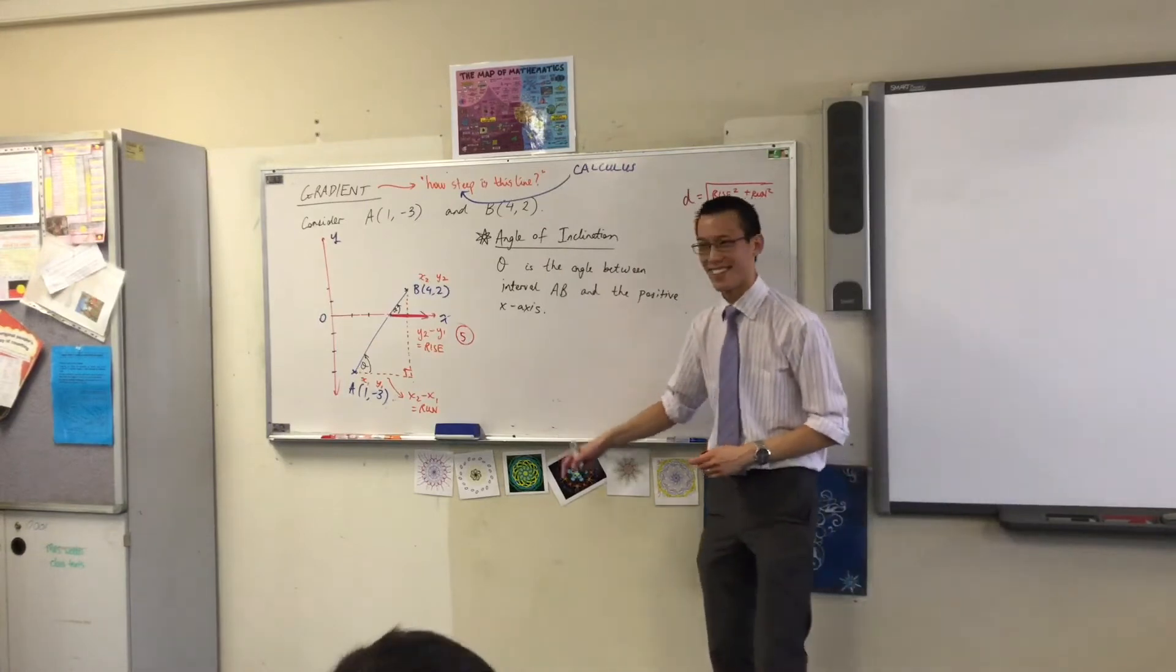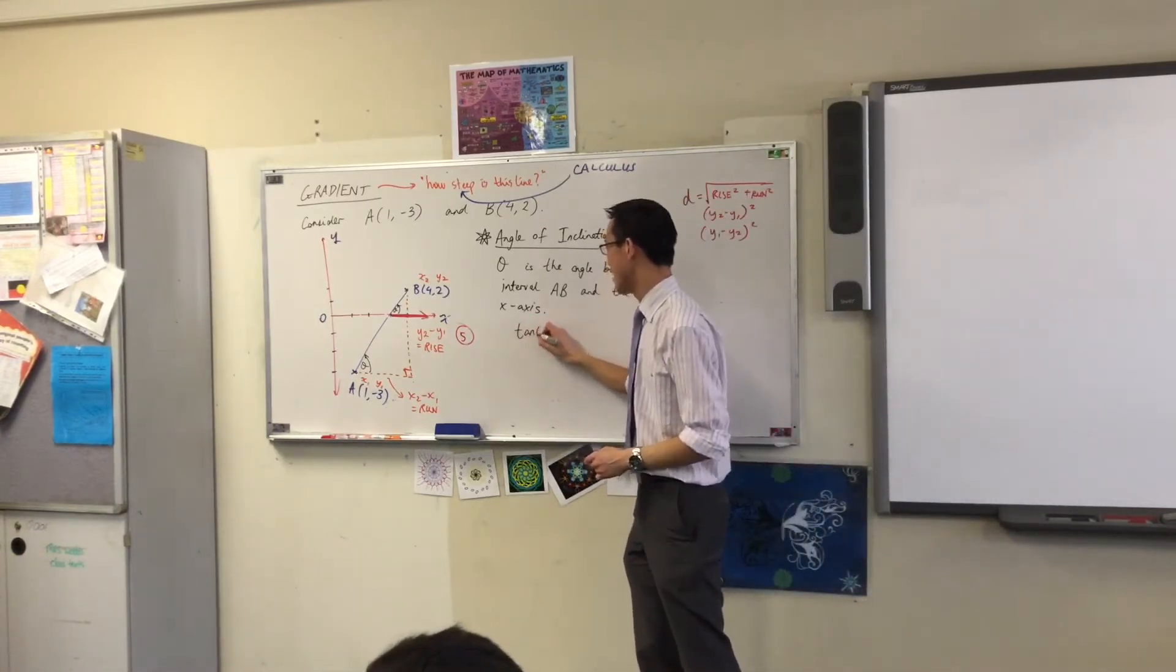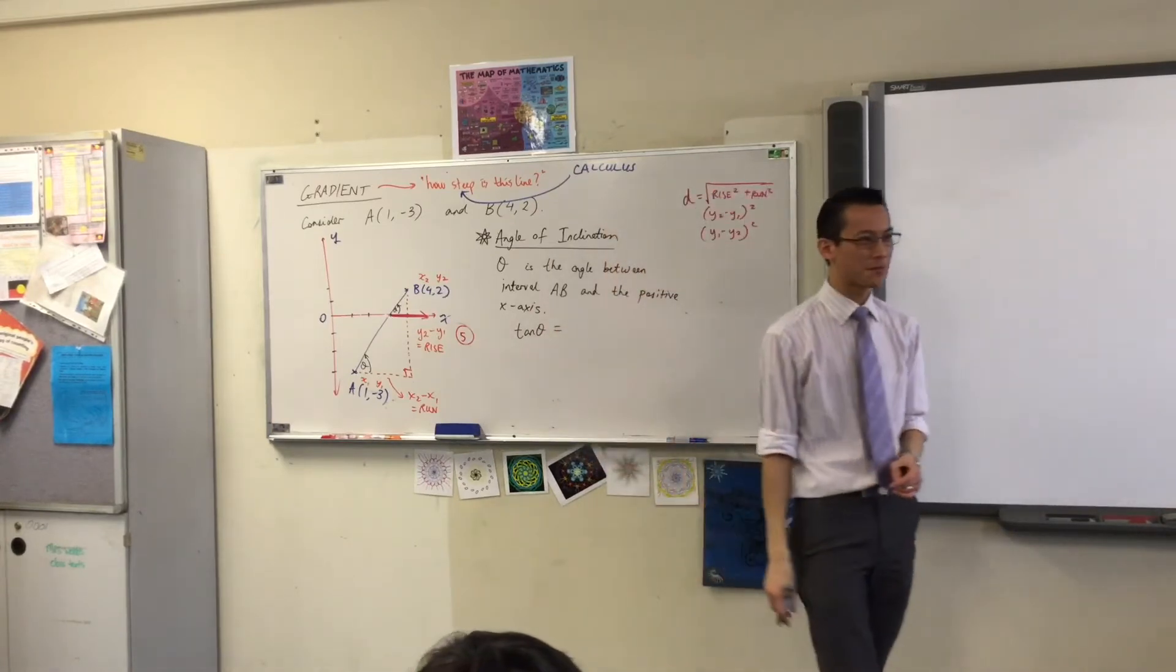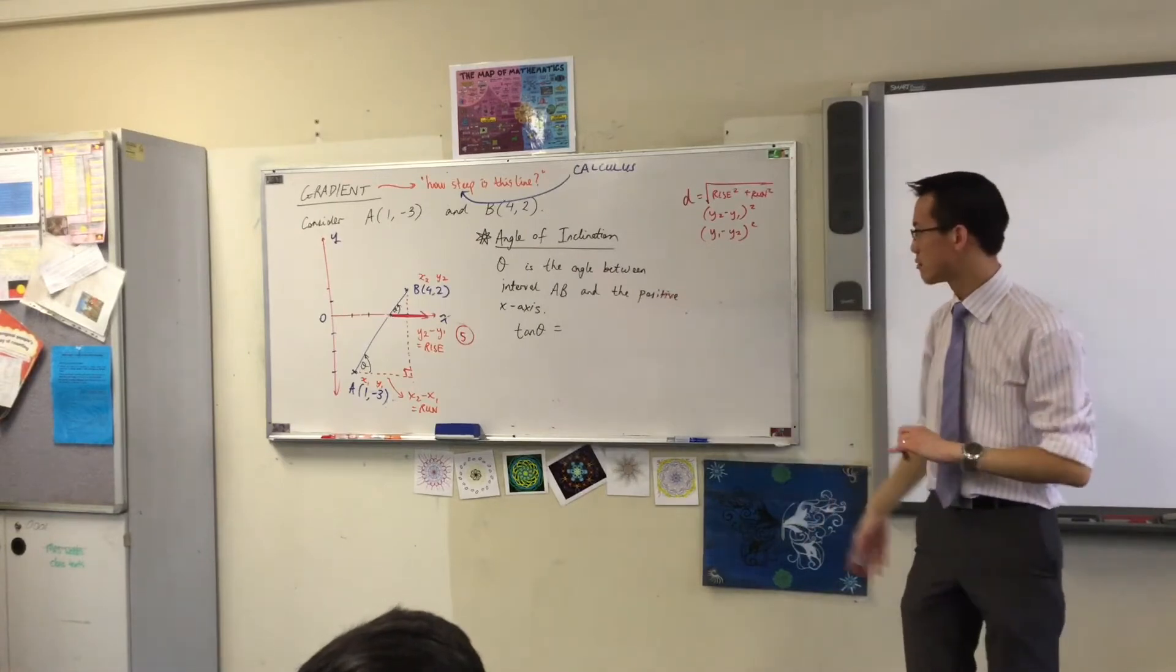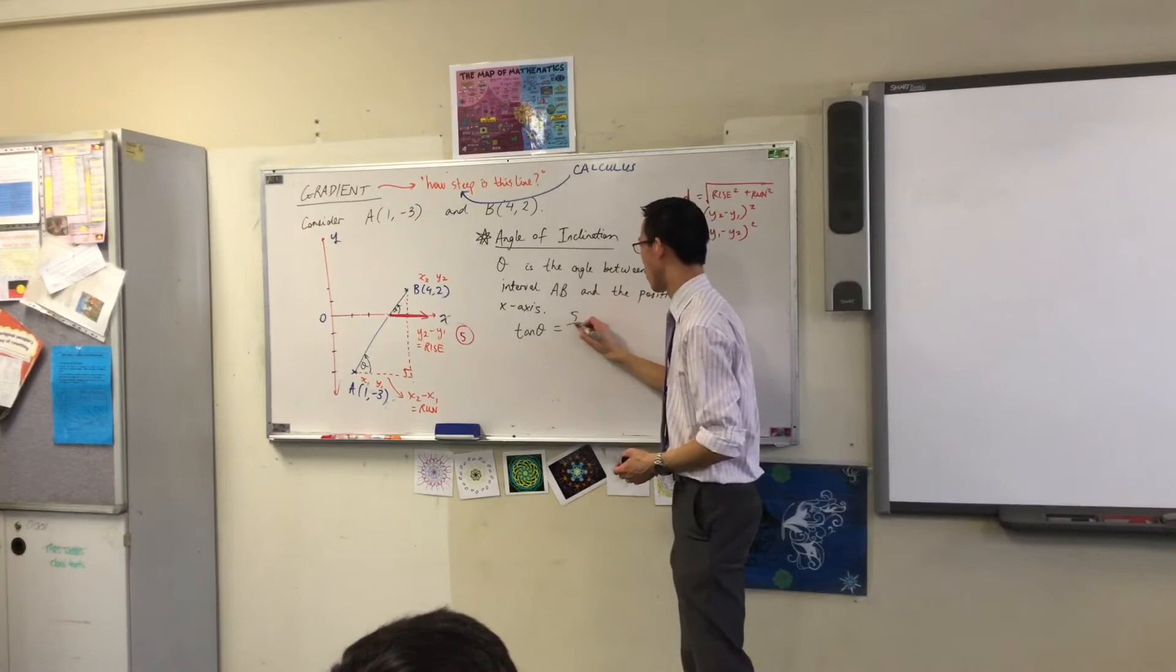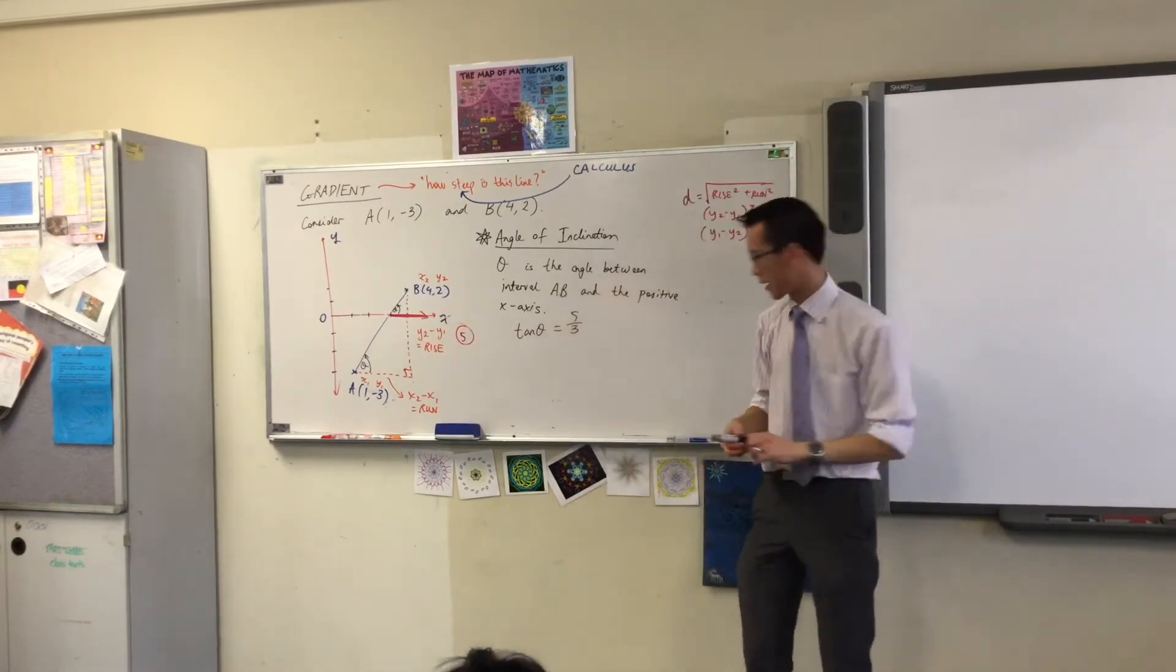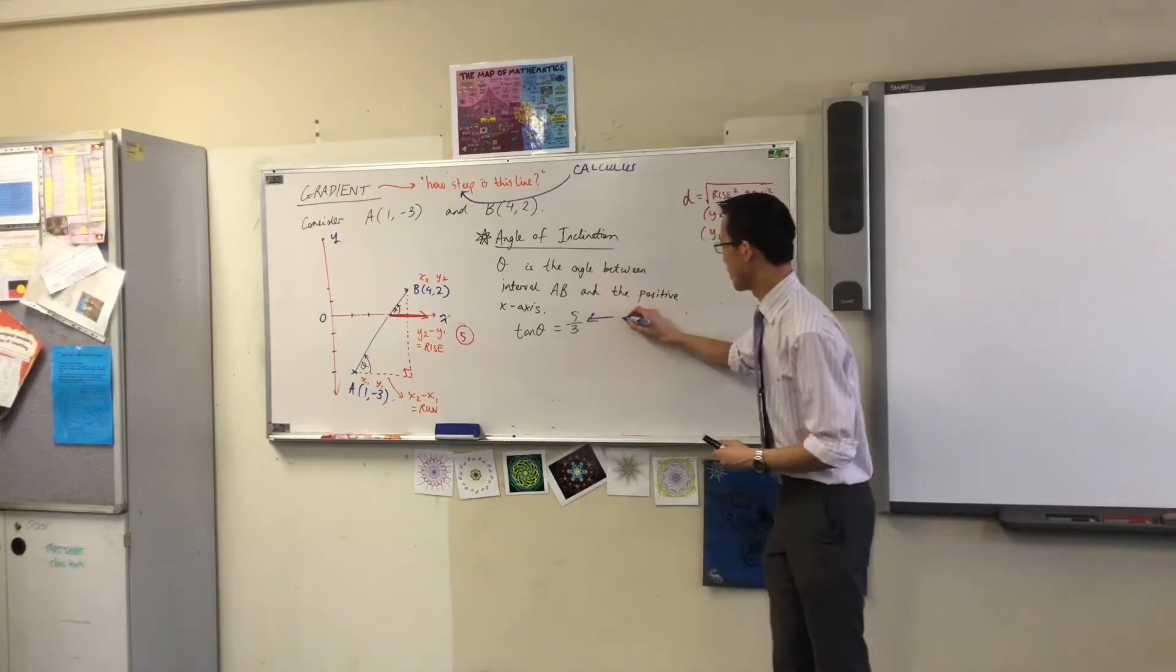So therefore, what I can write is, underneath here, I'm going to write tan theta equals opposite over adjacent. In this case, that's rise over run, which you guys worked out for me before, is 5 over 3. So tan theta equals the gradient.